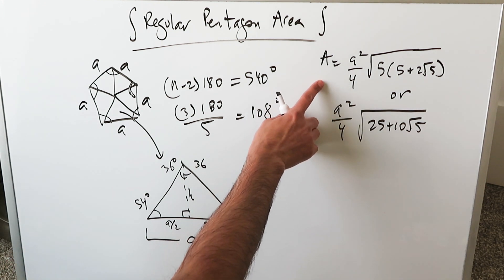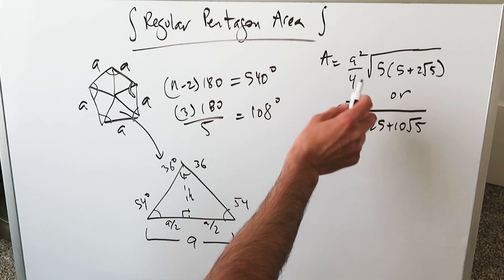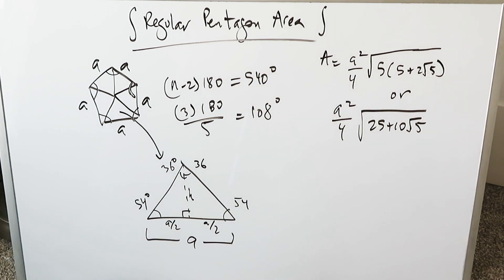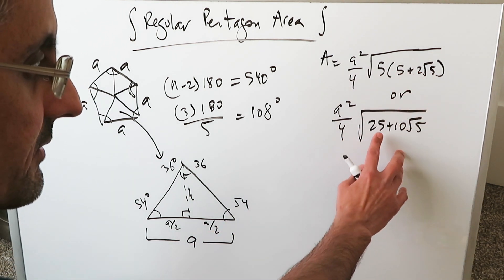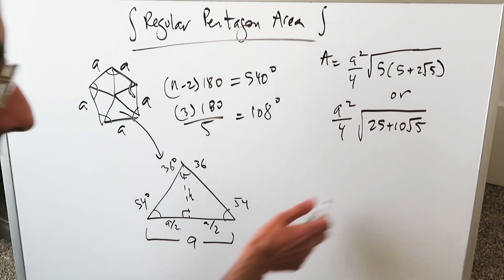This right here is the accepted formula for the area of a regular pentagon. A squared divided by 4, square root of 5 times the quantity 5 plus 2 root 5, or this. You open up the parentheses you have root 25 plus 10 root 5.